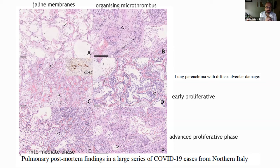For example, this is one of the first and most comprehensive studies — from Northern Italy — and we see that we have different stages of diffuse alveolar damage, as expected. This was one of the main patterns we see in this disease.